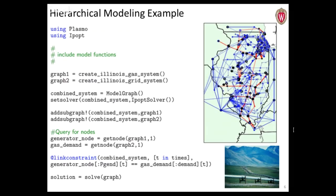Then you create the combined system: a new model graph, still using Ipopt, and you add the subgraphs to the combined system to get that hierarchical topology. You query a couple of nodes from each graph, link them together in the higher-level graph, and solve. This is a really nice way to manage complexity when building large hierarchical models — but in this case I'm still using Ipopt, so I'm not really taking advantage of the decomposition structure yet.